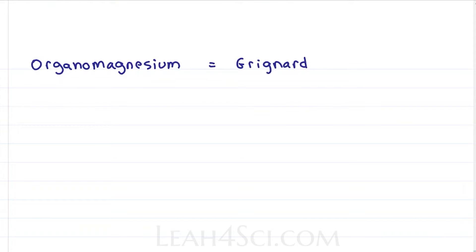The Grignard reagent is the most common organometallic that you're going to see in organic chemistry with the following structure, an R group bound to magnesium metal, bound to a halogen, most commonly bromine, but you'll also see chlorine and iodine.